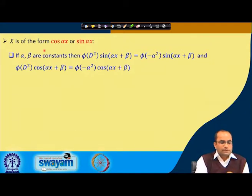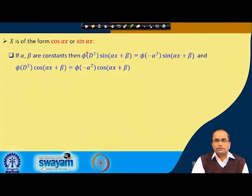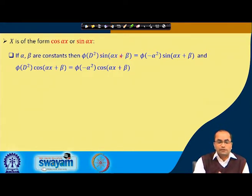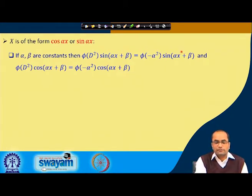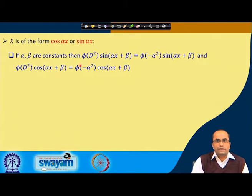To derive the result for when the right-hand side is a sine or cosine function, we first note the following: if α, β are constants and we have φ(D²) — a function of the operator D² — applied on sin(αx + β), the result equals φ(−α²)·sin(αx + β). The same result holds for cos(αx + β): D² is replaced by −α².